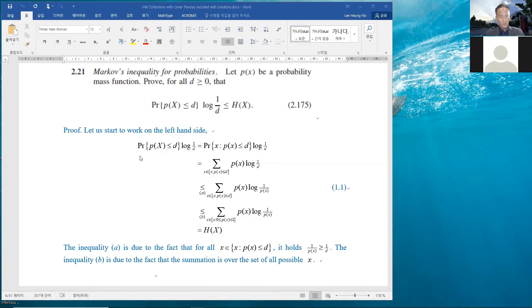So let us start to work with this one. I just copied it right here. And then I noticed that it is a probability of collection of all x that p of x is less than d. That's what this means. And multiply that with log 1 over d. I just copied it.